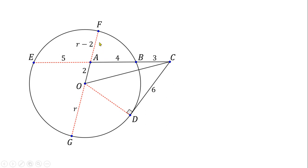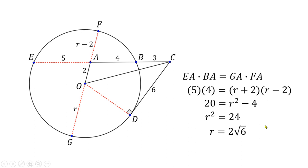Now, observe also that we can apply the power of a point theorem to the chords GF and EB. So, we have the equation EA times BA equals GA times AF. Now, replacing this with the values here, we get 5 times 4 equals R plus 2 times R minus 2. Solving for R, we get R equals 2 square root of 6.